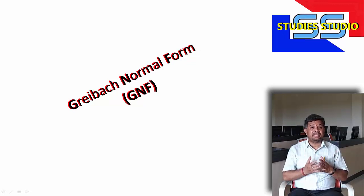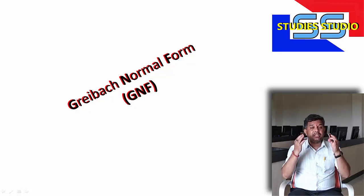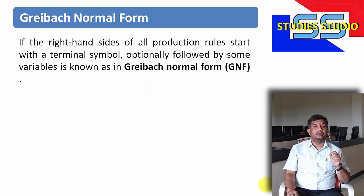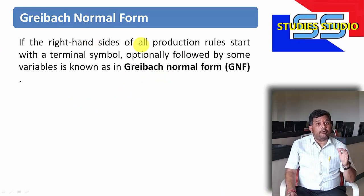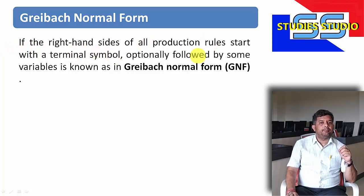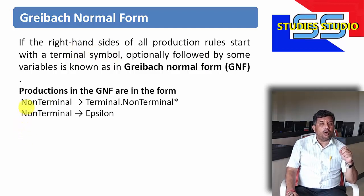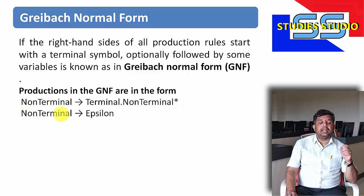In our previous videos, we have seen what is the requirement of a normal form, and apart from that, we have seen what is Chomsky's Normal Form. Today we are going to learn about Greibach Normal Form. If the right-hand side of all the production rules starts with a terminal symbol, optionally followed by some variables, it is known as Greibach Normal Form. The production of GNF will be in the form: non-terminal derives a terminal followed by a non-terminal, or non-terminal derives epsilon.